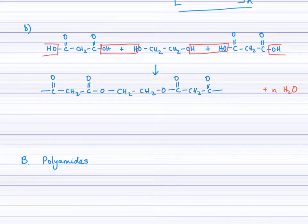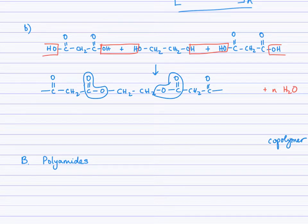You'll notice here that this time the ester linkages actually face each other, if you will. So they're not all going in the same direction. And that's a clue for you that this is a copolymer, that it was made from two different monomers.